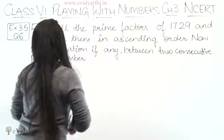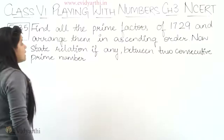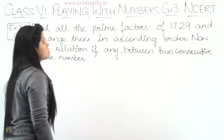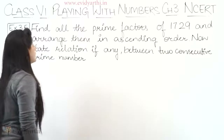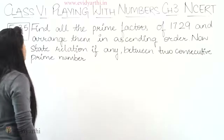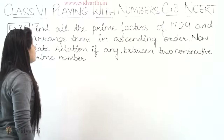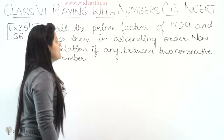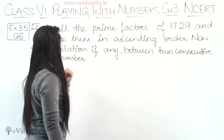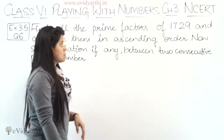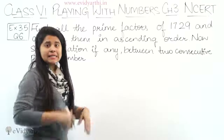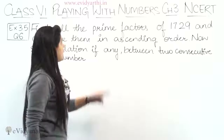In this question we have to find all the prime factors of 1729 and arrange them in ascending order. Then state the relation, if any, between two consecutive prime numbers. Let's do it step by step.